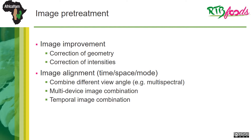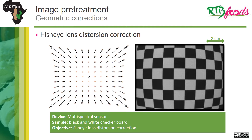Once the image is acquired, it is sometimes necessary to apply some correction or filter in order to allow for correct interpretation. Image pretreatment includes improvements using geometry or intensity correction, but can also focus on image alignment. The correction of distortion related to the convex lens, such as fisheye, is a fairly common problem.